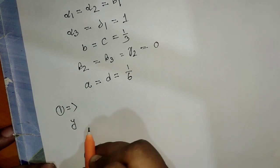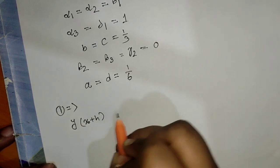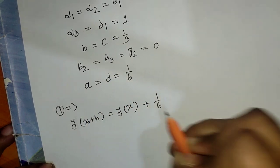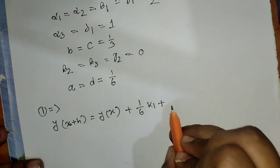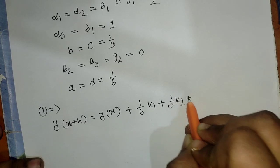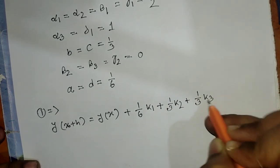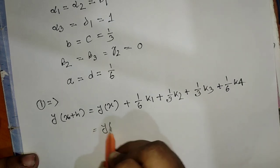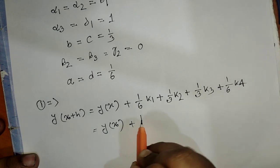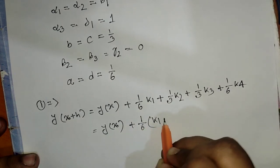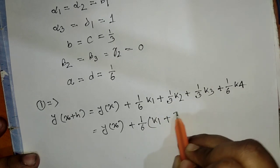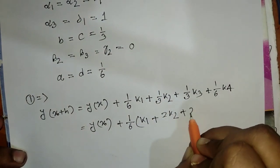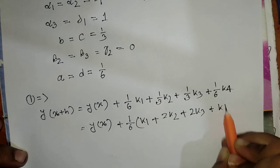The final formula is: y of x plus h equal y of x plus 1 by 6 times k1 plus 1 by 3 times k2 plus 1 by 3 times k3 plus 1 by 6 times k4. That is, y equal y plus h over 6 times k1 plus 2k2 plus 2k3 plus k4.